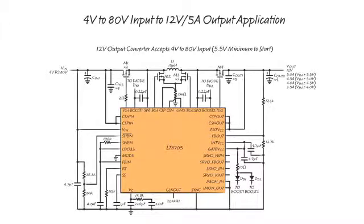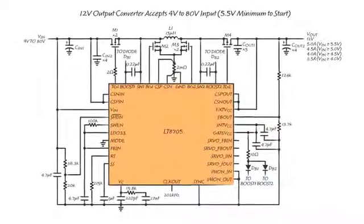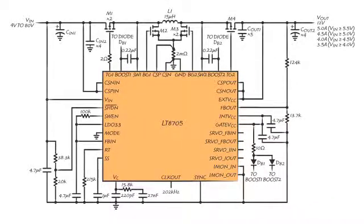Here the LT8705 is used to generate a lower output voltage, 12 volts in this case. The input voltage range is very wide at 4 volts minimum to 80 volts maximum. The output load can be as high as 5 amps.